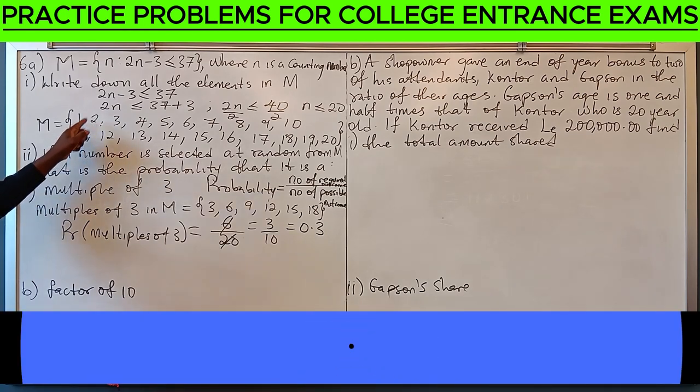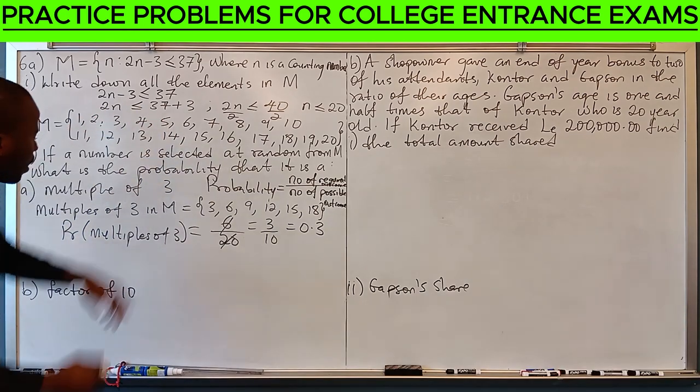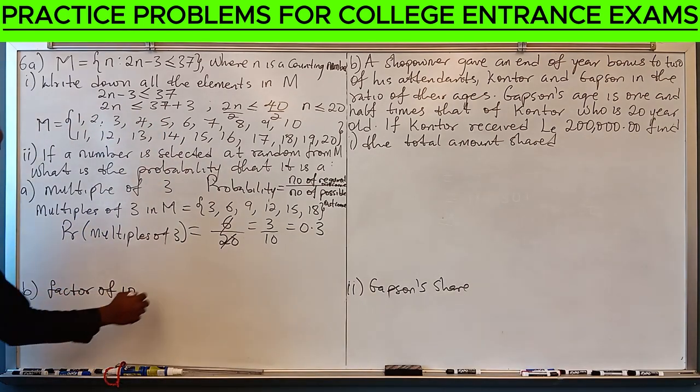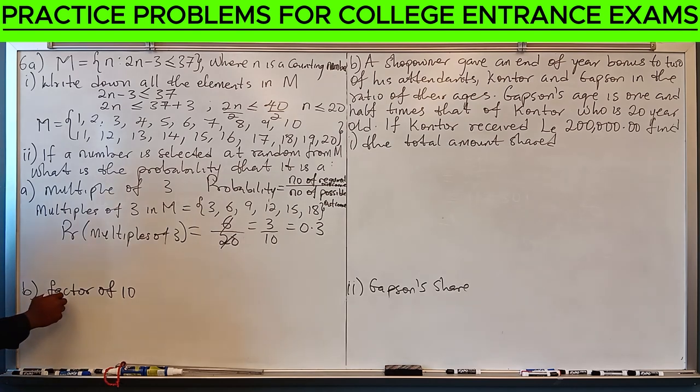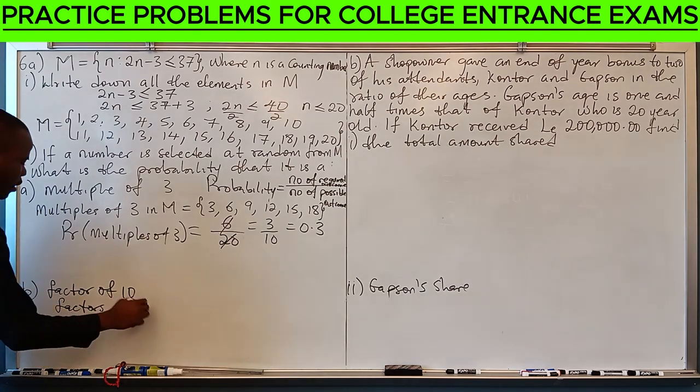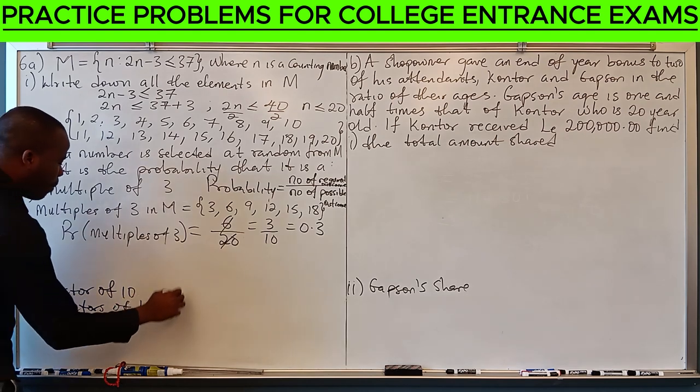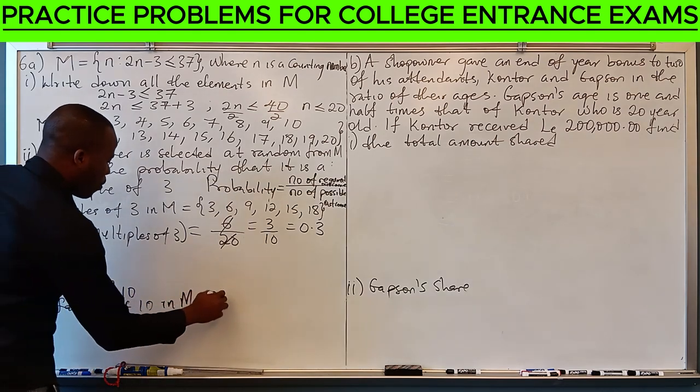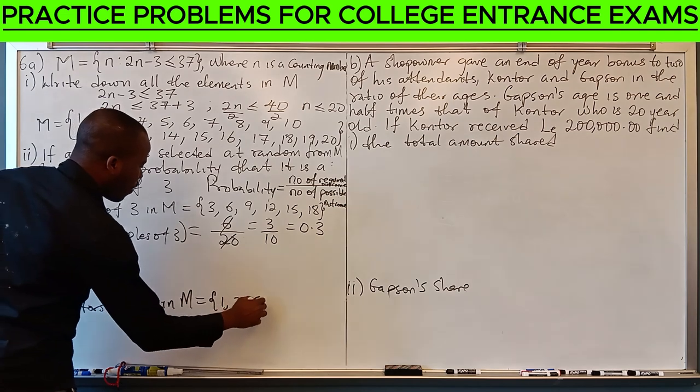In this set, they are 1, 2, 5, and 10. So, factors of 10 in M are 1, 2, 5, 10.